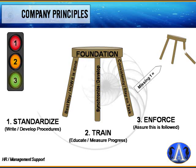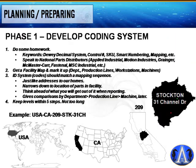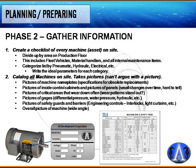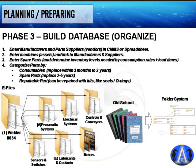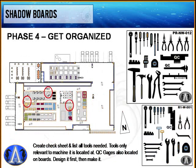To recap so far: you have your company policies and procedures in place, you've developed your coding system, gathered information, and built your database. Now for phase four — getting organized.